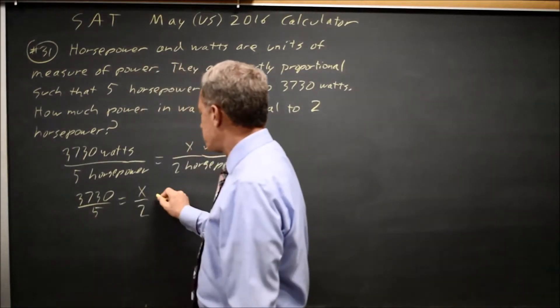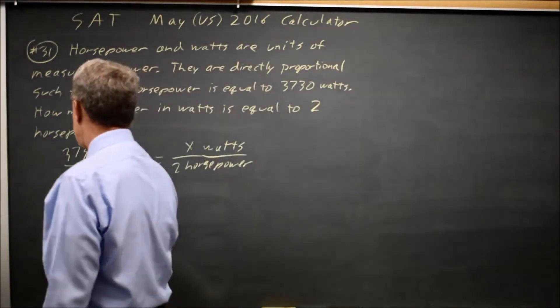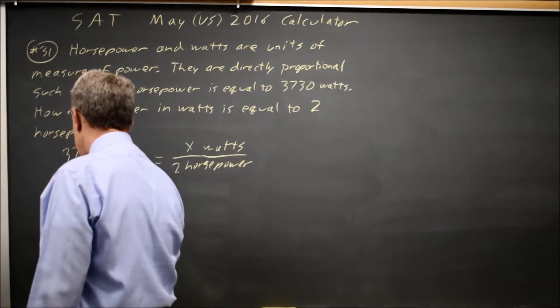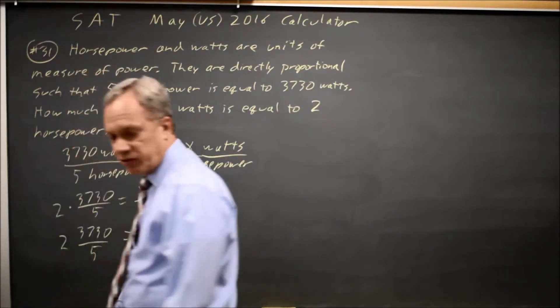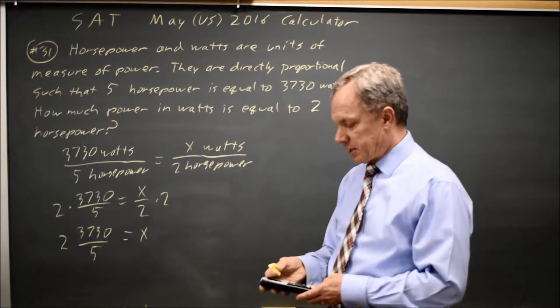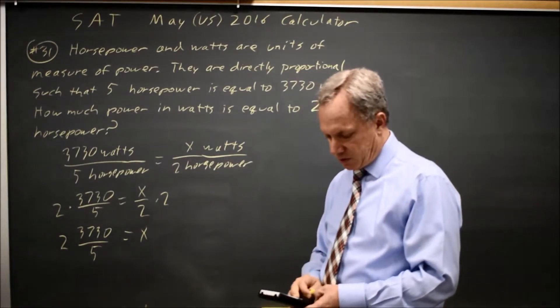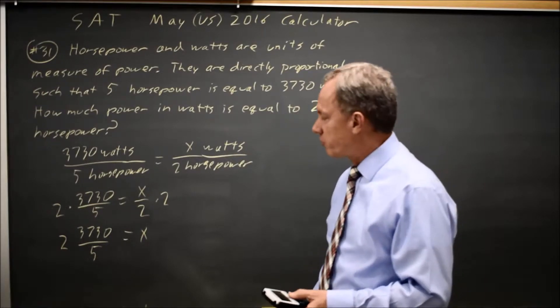If I multiply both sides by 2, I get x by itself. So x equals 2 times 3730 over 5, and my calculator will tell me what that is. 2 times 3730 over 5 is 1492.